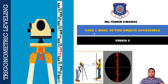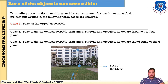So now, first case number 1. In this particular session, I have explained about case number 1, based on the object being accessible. You know that depending upon the field condition and the measurements that can be made with the instrument available, the following three cases are involved. I have already explained and given an overview of three cases in the previous session, means session number 1.